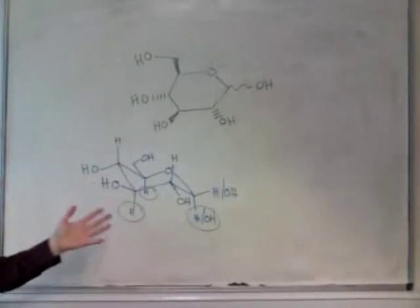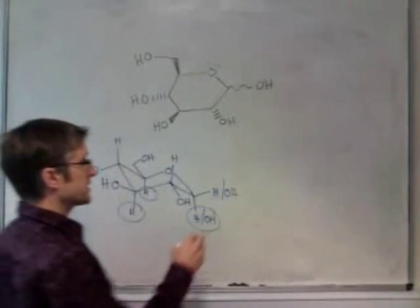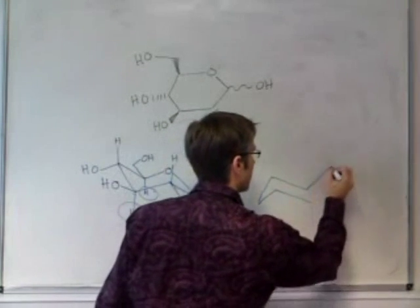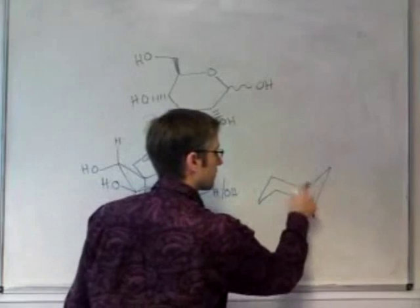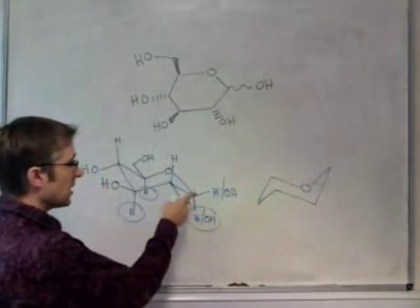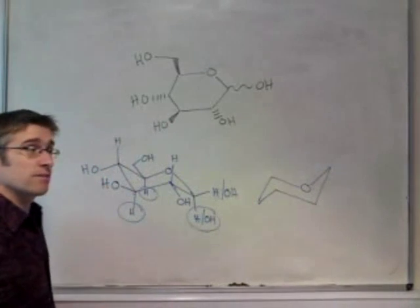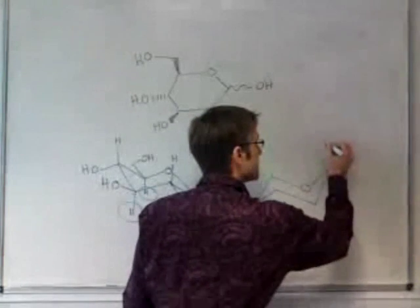This is also true of glucose. So we also need to consider that we could have the flipped ring like this, with the oxygen there. The right-hand end has come up, the left-hand end has gone down. Let's see what effect this would have.